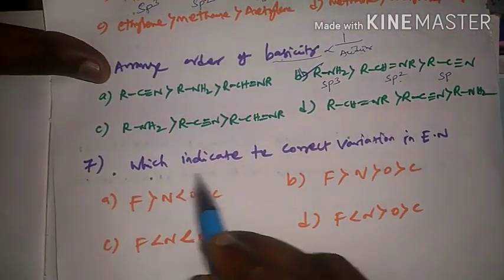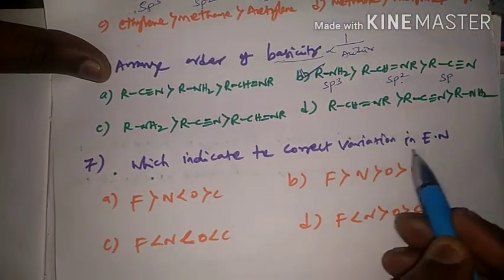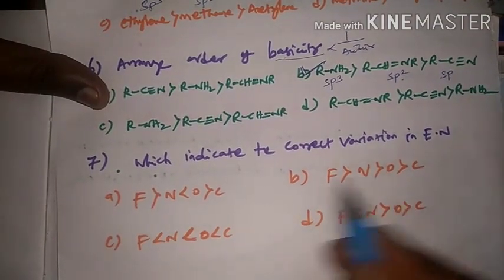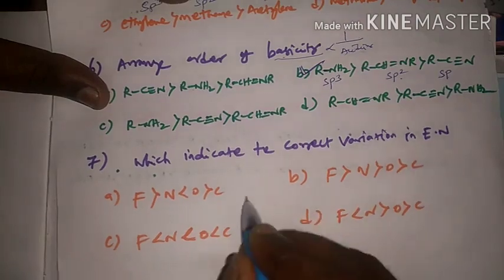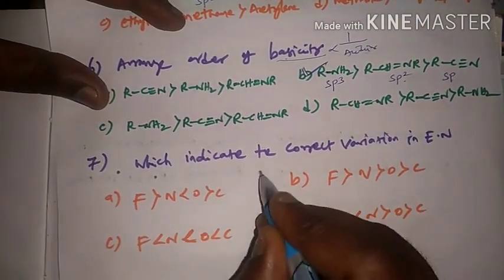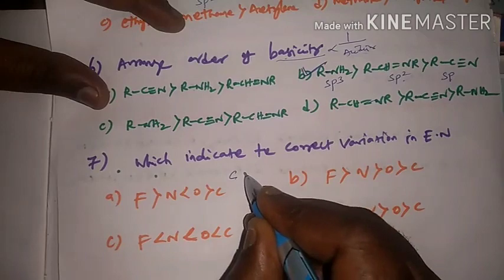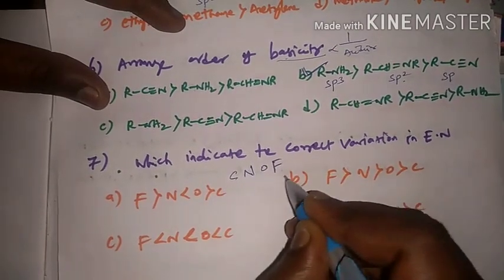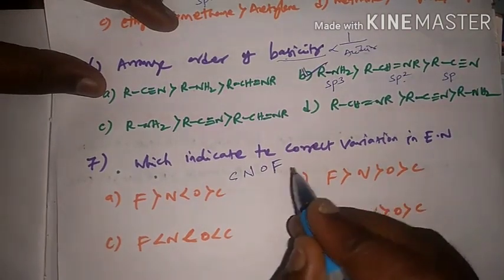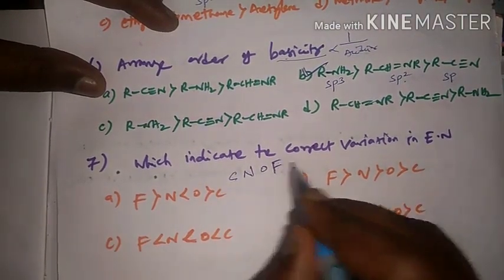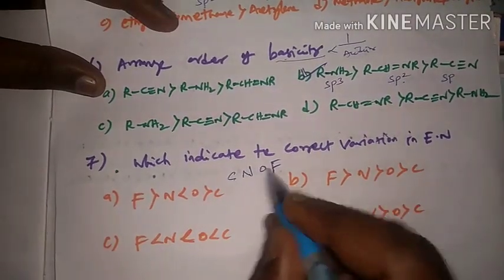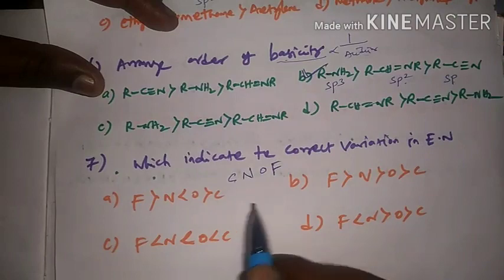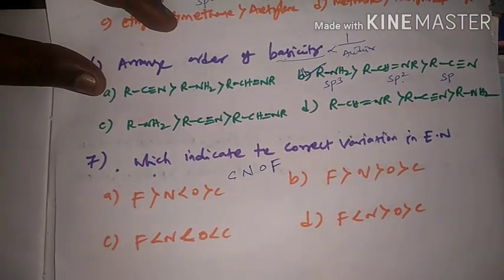Seventh question: which indicates the correct variation in electronegativity? The correct order matters — carbon and nitrogen present a common problem. Note that chlorine is highly electronegative in the periodic table, and the options must be evaluated carefully.